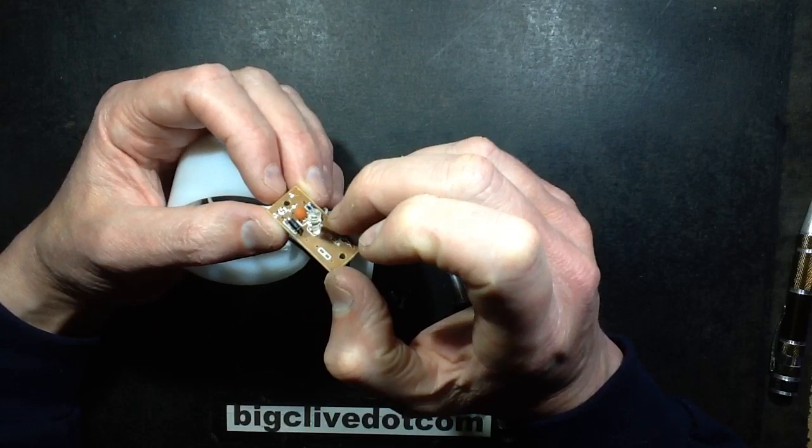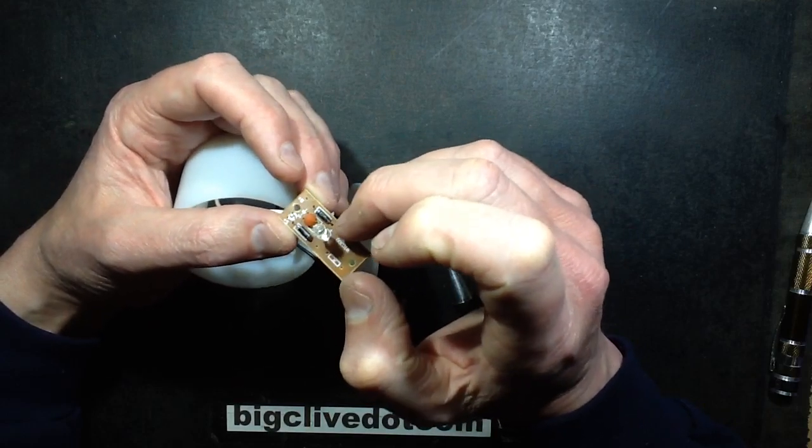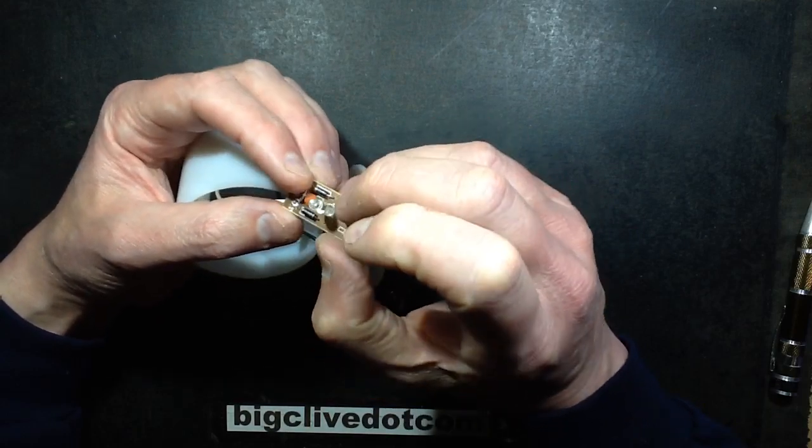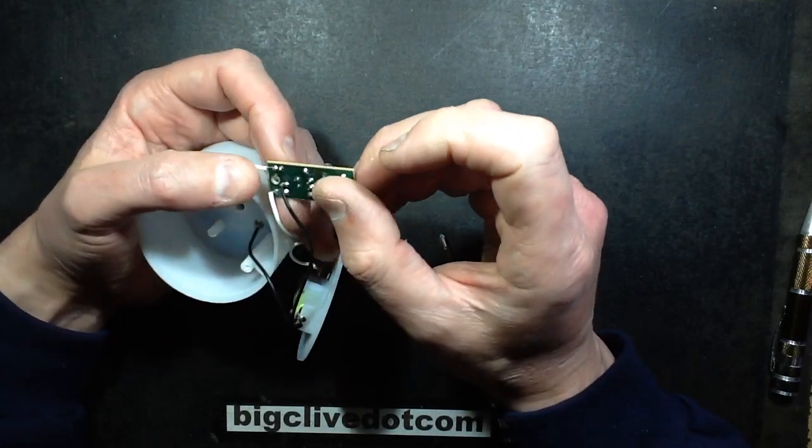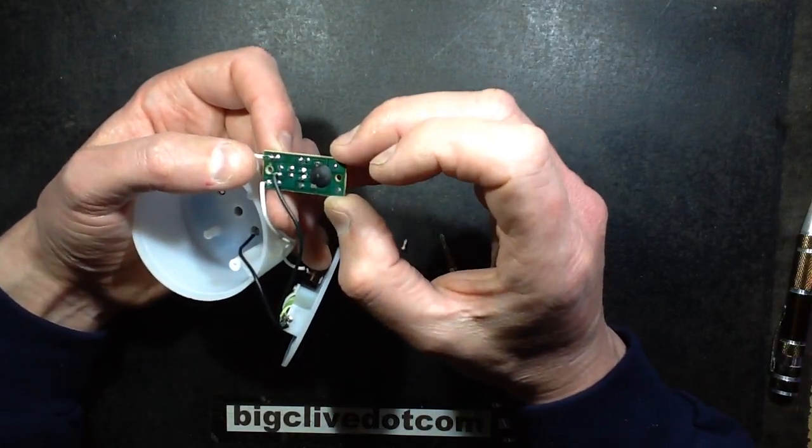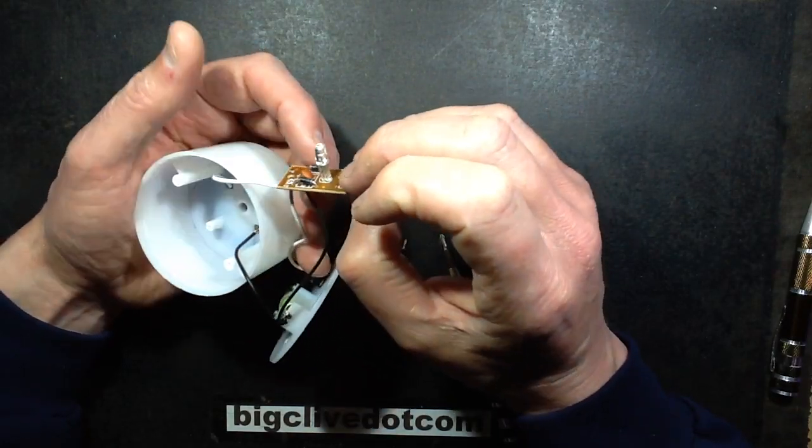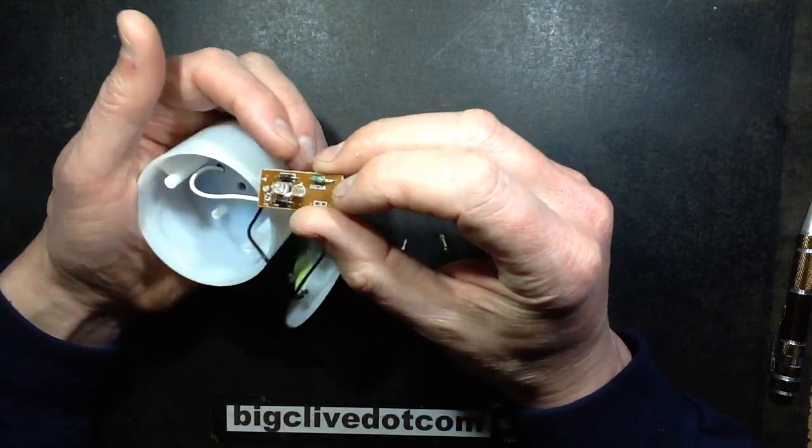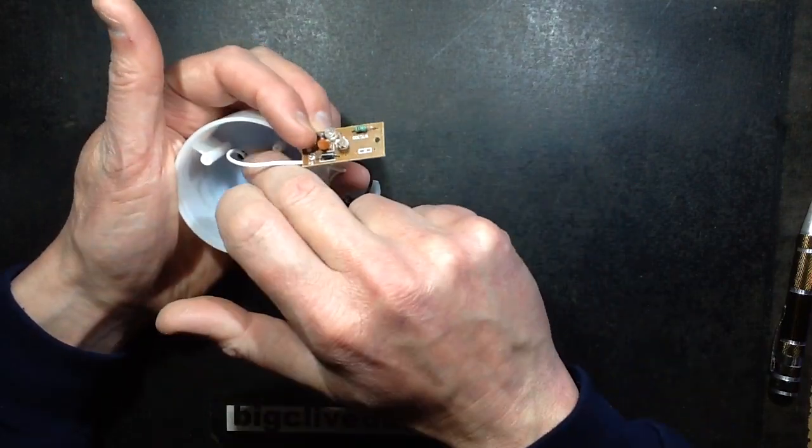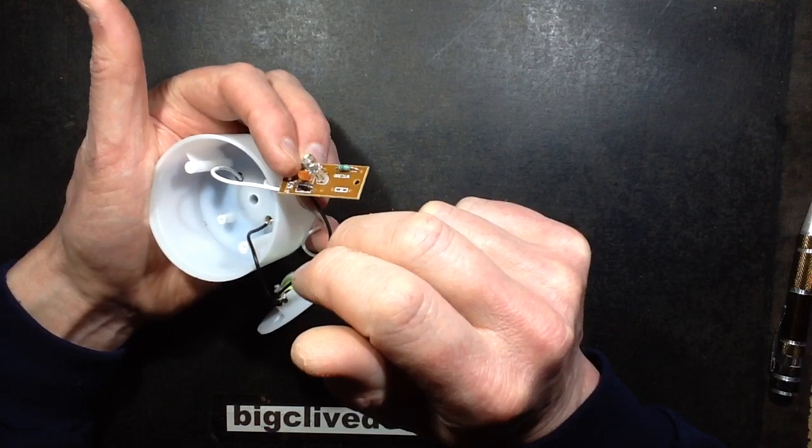And when that would have fed where the LED would have been, it just rectifies that and smooths it to create a very simple DC supply. The other diode is fundamentally a rectifier from the solar panel.